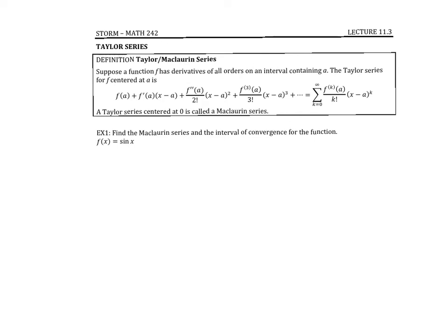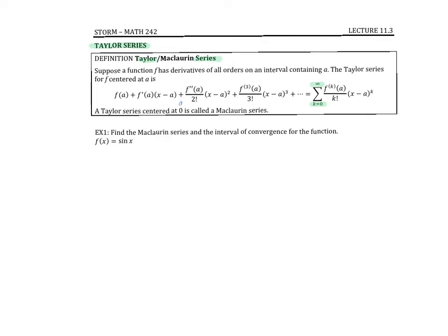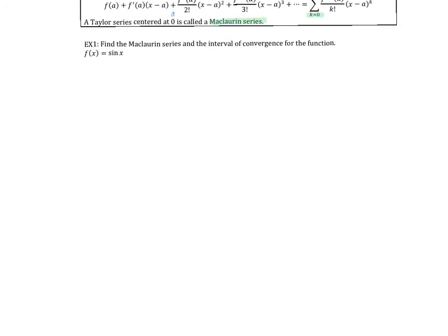In section 11.3, we're going back to power series. From power series we defined a Taylor polynomial, which is a power series that stops at some n value. Now we're going to look at the Taylor series, which comes from taking that series from zero to infinity — not stopping at an n value. If the center a is zero, this Taylor series is called a Maclaurin series.